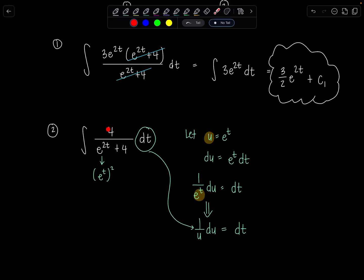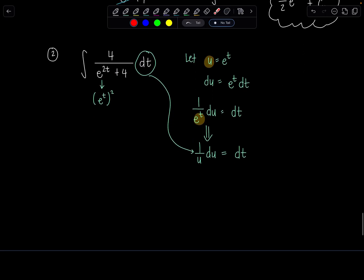So then I can just say that 1 over u du equals dt. So I'm going to replace dt with 1 over u du. 4 is going to stay in the numerator, minding its own business. And then this will be u squared plus 4. Got it? Okay, then from there we can have another discussion. But so far, so good. So I've got 4, let's just put the du up there, why not, over u times u squared plus 4. Are we okay? Okay, good. Now from here, I would just jump straight to finding the partial fraction decomposition of the integrand.